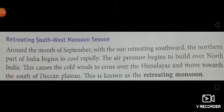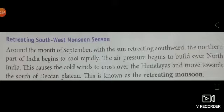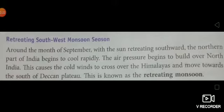The air pressure begins to build over north India. This causes cold winds to cross over the Himalayas and move towards the south of the Deccan Plateau. North India में air pressure बढ़ने लगता है, और ठंडी हवाएं Himalayas की तरफ से आती हैं और south में Deccan Plateau की ओर shift हो जाती हैं. This is known as the retreating monsoon.